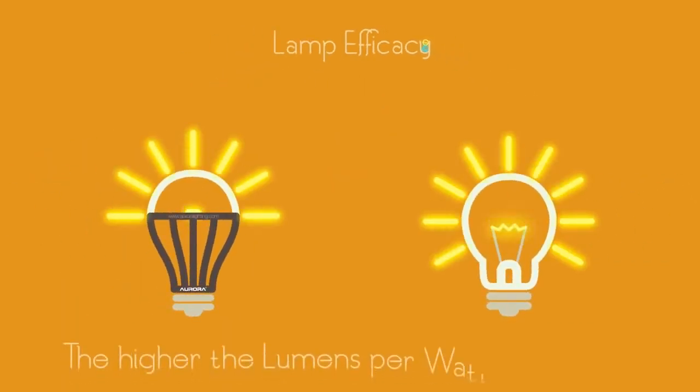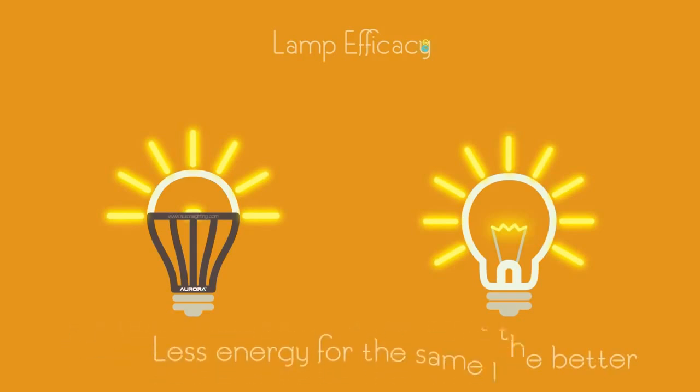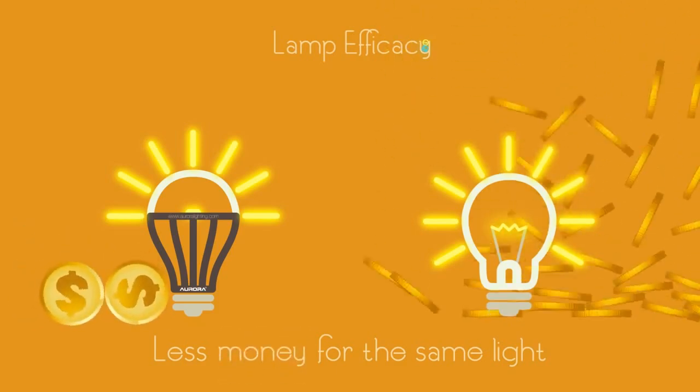The higher the lumens per watt, the better. This means a lamp uses less energy to emit the same or a greater amount of light. This translates to less money spent on the same amount of light.